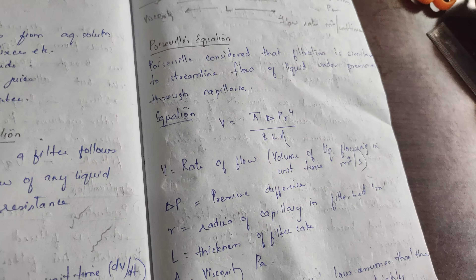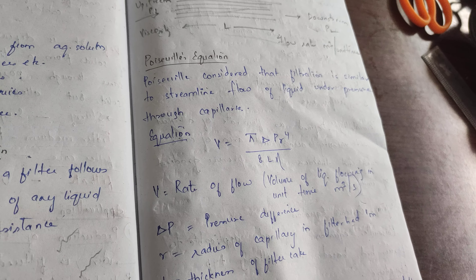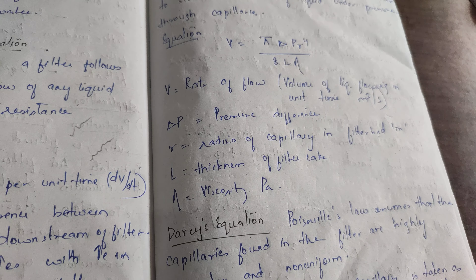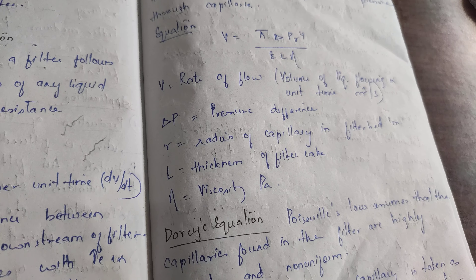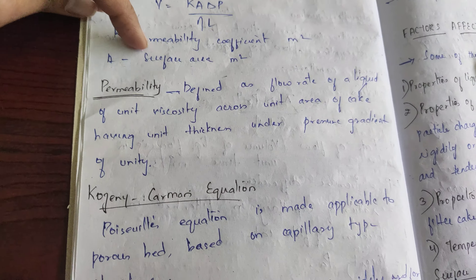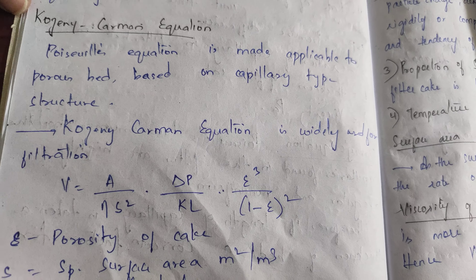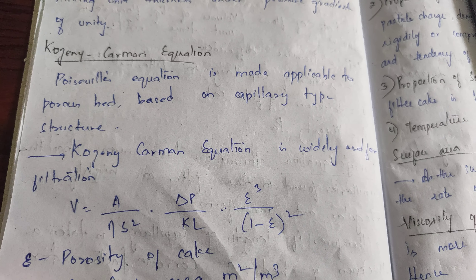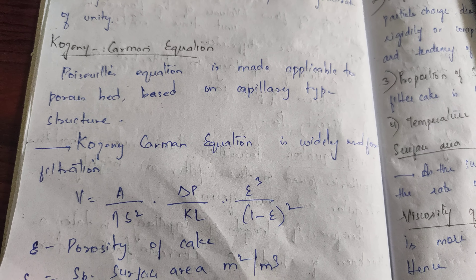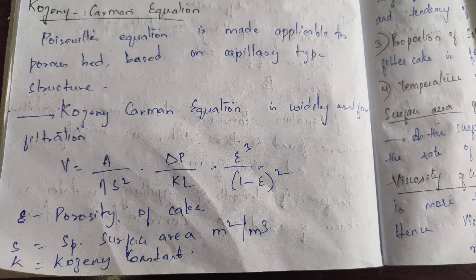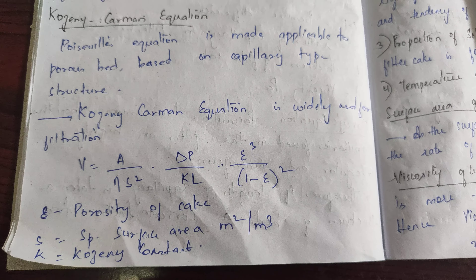Poisson said that the liquid flows under capillaries under pressure. Darcy said that liquids flow in capillaries but the capillaries are not uniform, so a correction factor must be introduced. Kozeny-Karman further stated that the filter bed is a porous bed, so he introduced one more factor, epsilon, and modified the equation accordingly.